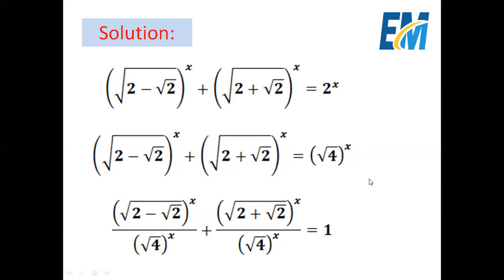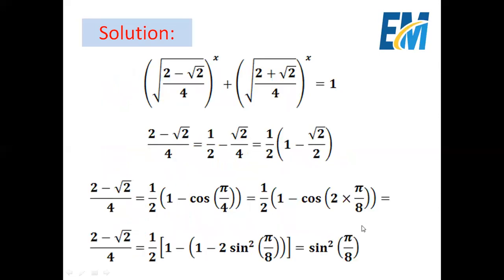We can now divide the whole equation by square root of 4 to the power x. Here we can put (2 minus square root of 2) and 4 under one radical sign and one power. So we will have square root of (2 minus square root of 2) all over 4, to the power x, plus the same for the second term, equals 1. The equation becomes: square root of (2 minus square root of 2) over 4, all to the power x, plus square root of (2 plus square root of 2) over 4, all to the power x, equals 1.